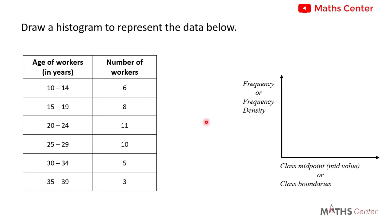From the previous video we learnt that when you are asked to draw a histogram for grouped data, you may have the class midpoint or the midvalue, or the class boundaries on the horizontal axis. On the vertical axis you may have the frequencies or the frequency densities, depending on the class size or class width of the different classes that you have.